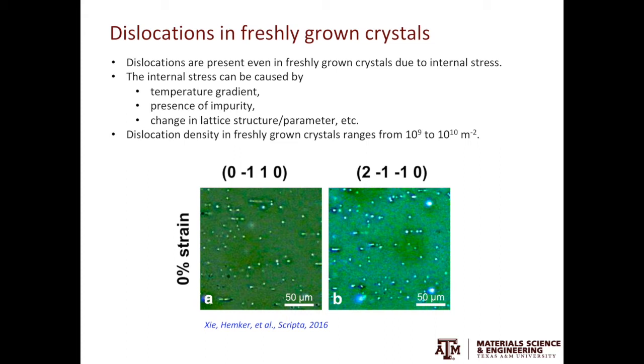The dislocation density in the freshly grown crystals is quite low. Usually it ranges from 10^9 or 10^10 per meter squared. After plastic deformation, the dislocation density can easily go up to 10^12 per meter squared.